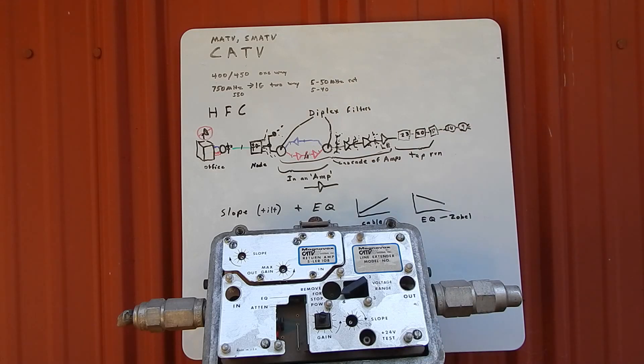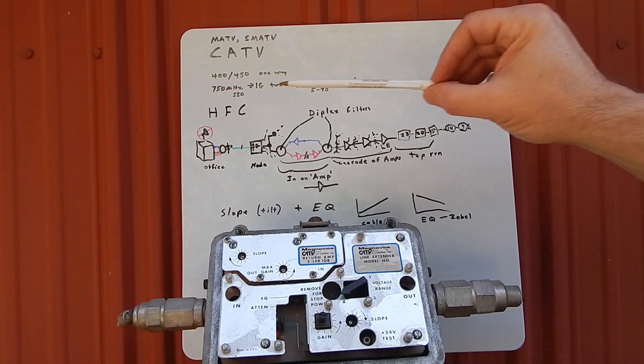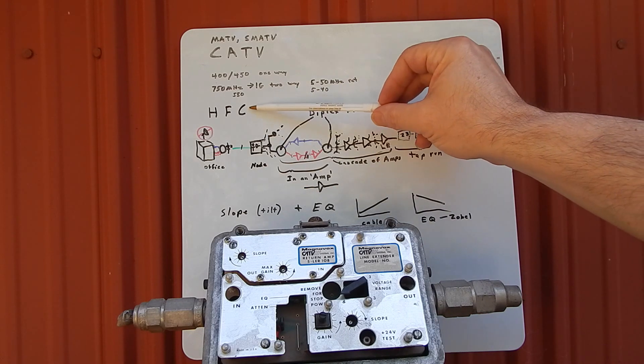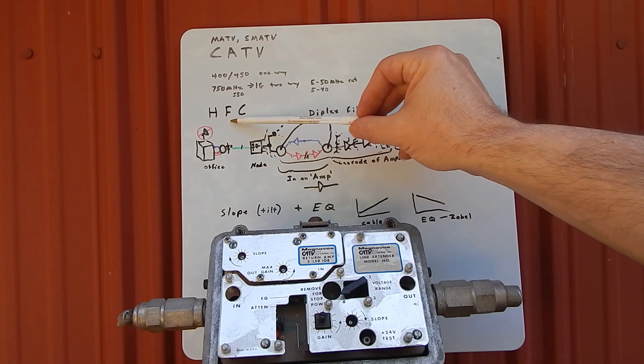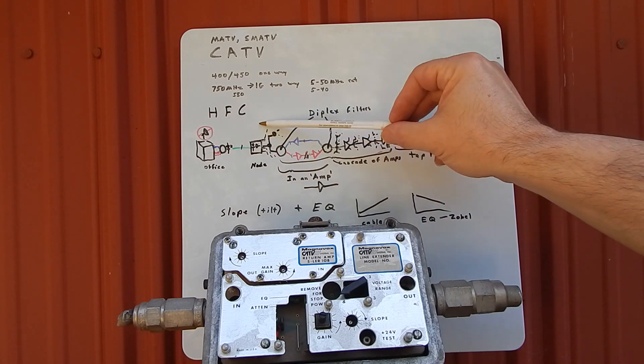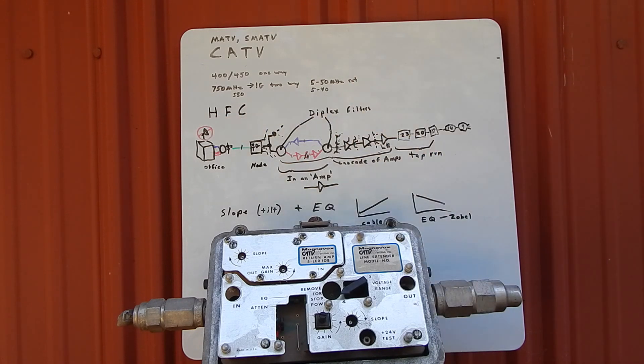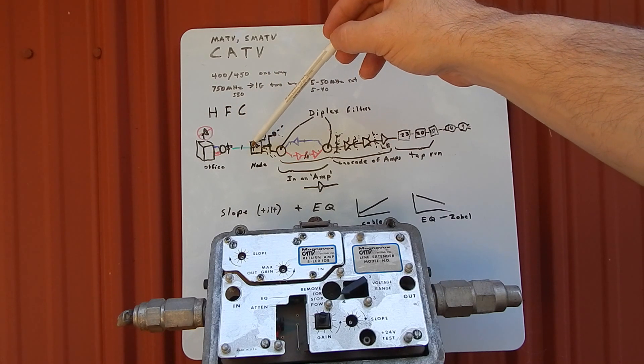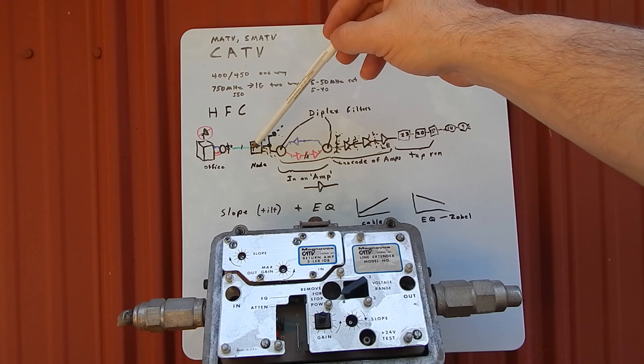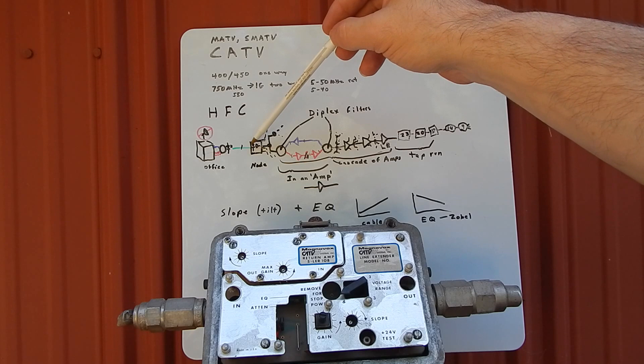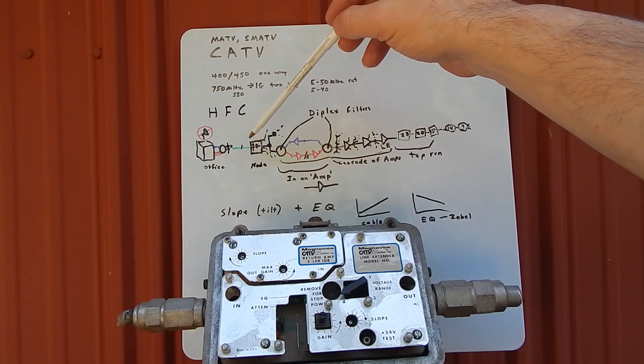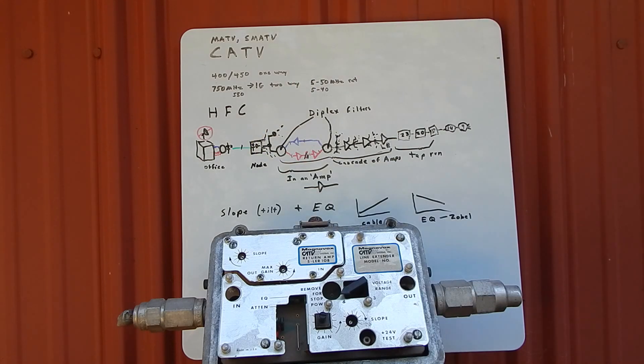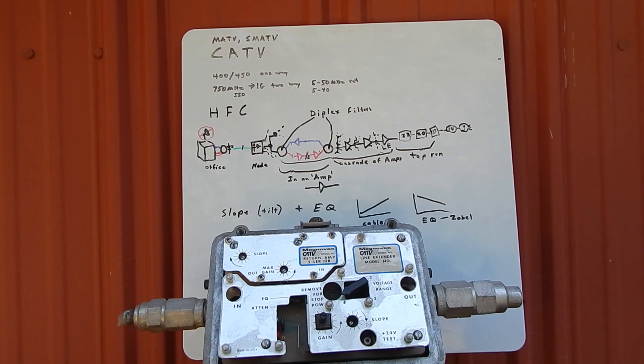Most modern cable systems today are HFC—Hybrid Fiber Coax—which means we're using fiber for the big lengths. When we get into your neighborhood, probably right on your block or maybe a block or two away, there'll be a fiber optic node. They've made these smaller and smaller, these node areas.